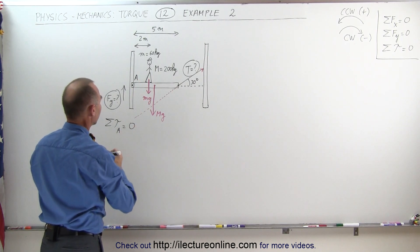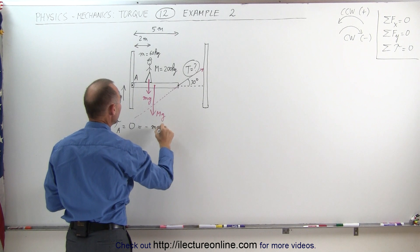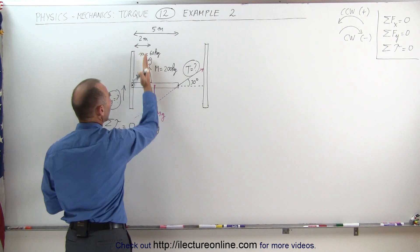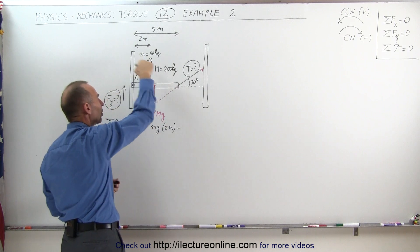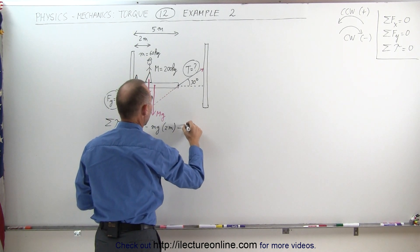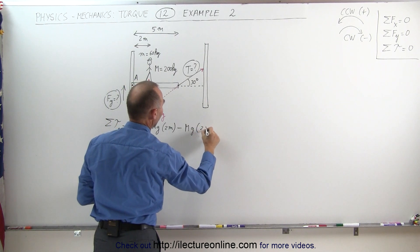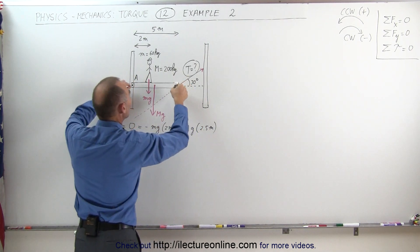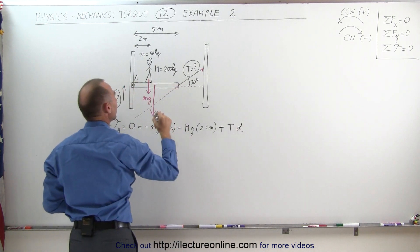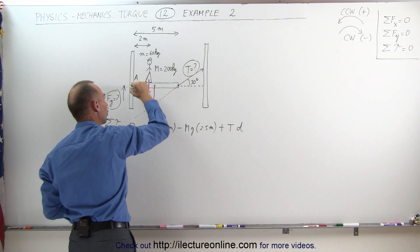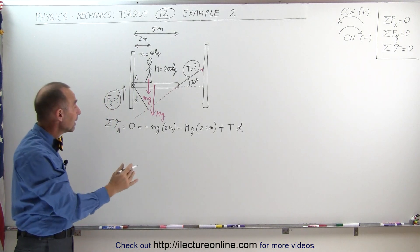The first torque is the weight of the person, which causes clockwise motion about point A — that's a negative torque: minus small mg times the perpendicular distance of 2 meters. Second, the weight of the beam also causes clockwise motion — a negative torque: minus big mg times 2.5 meters (the distance to the beam's center). Finally, the tension causes counterclockwise motion — a positive torque: plus T times perpendicular distance D.